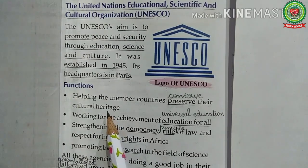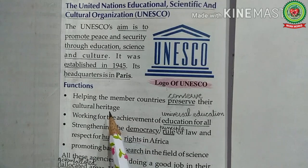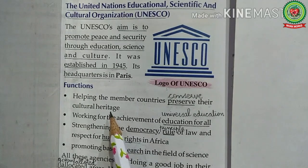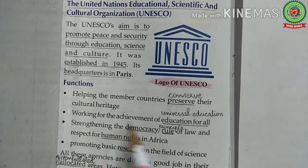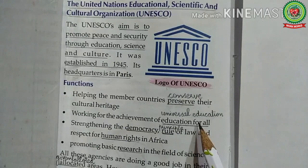That agreement sets out the duties of countries in identifying potential sites and their roles in protecting and preserving them. By signing this agreement, each country pledges to conserve not only the world heritage sites situated on its territories but also to protect its natural heritage. Working for education for all means universal education, and UNESCO is the only United Nations agency with a mandate to cover all aspects of education.